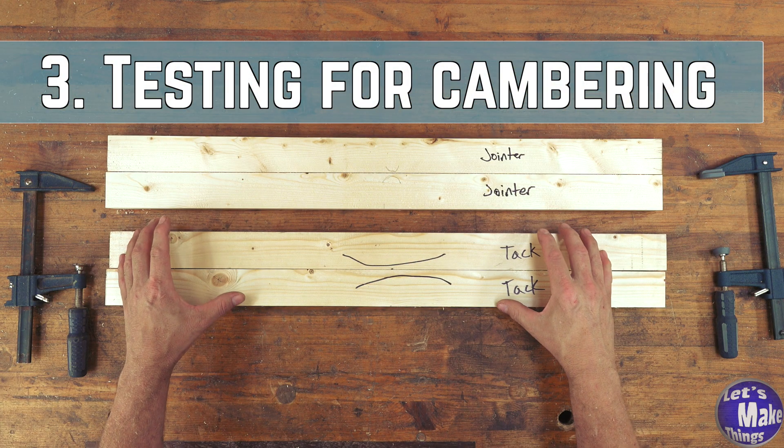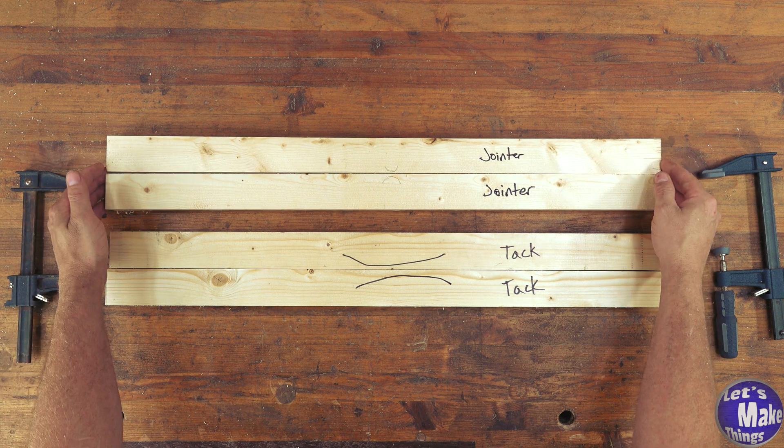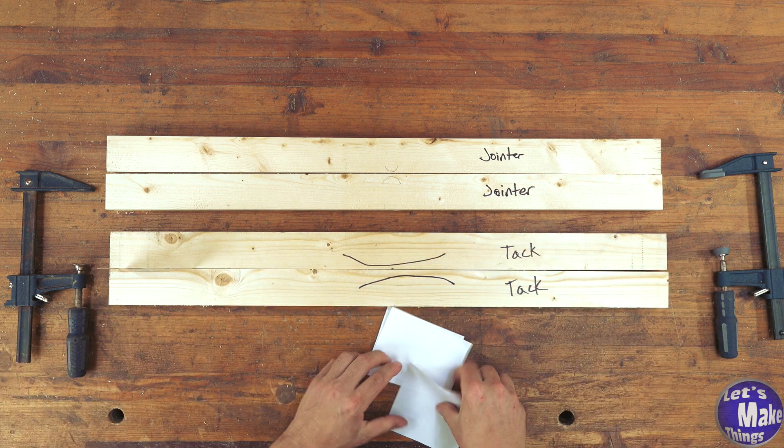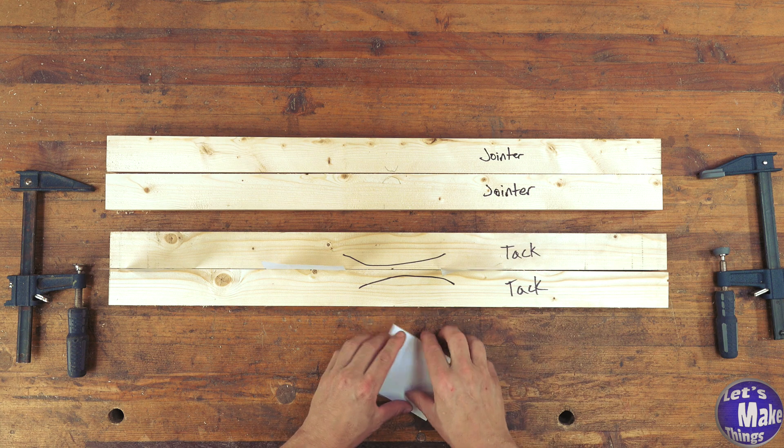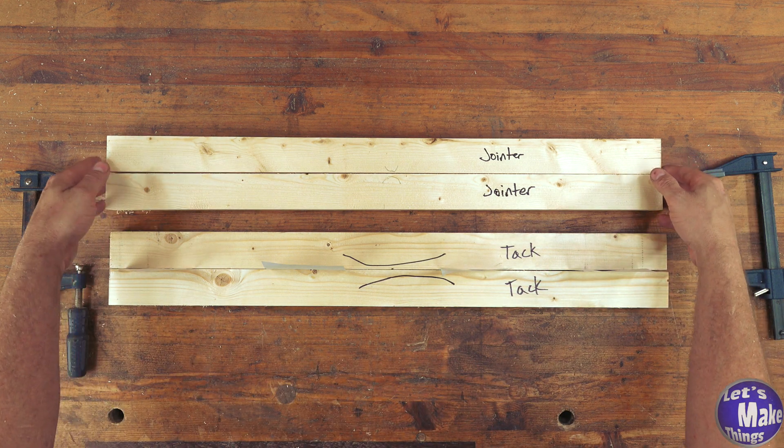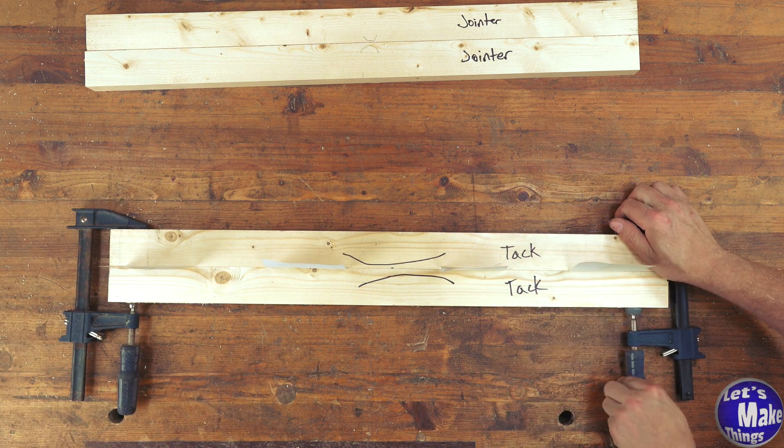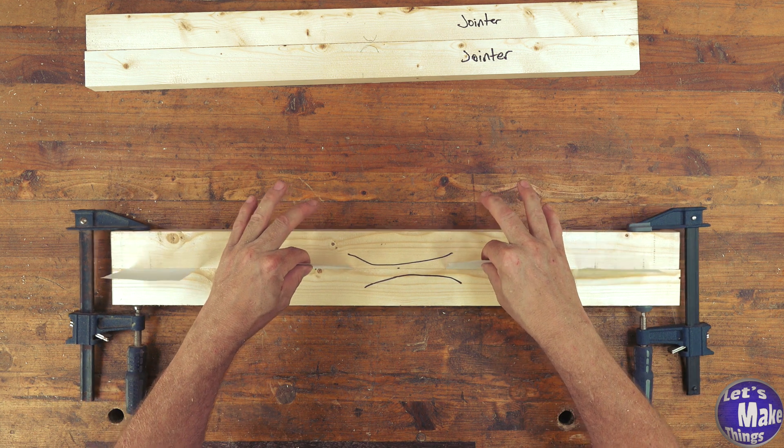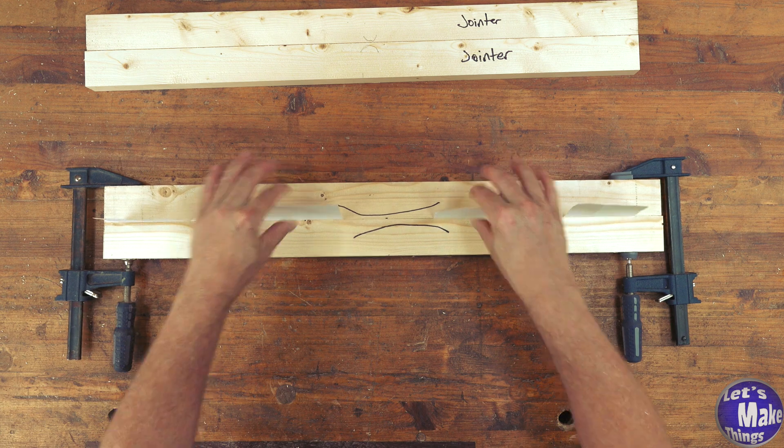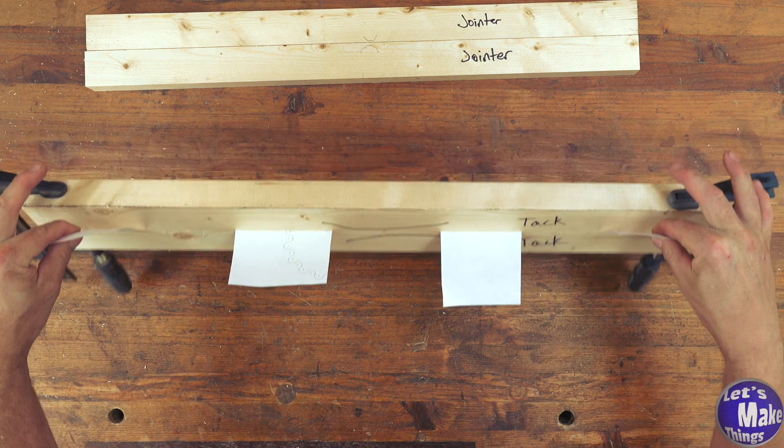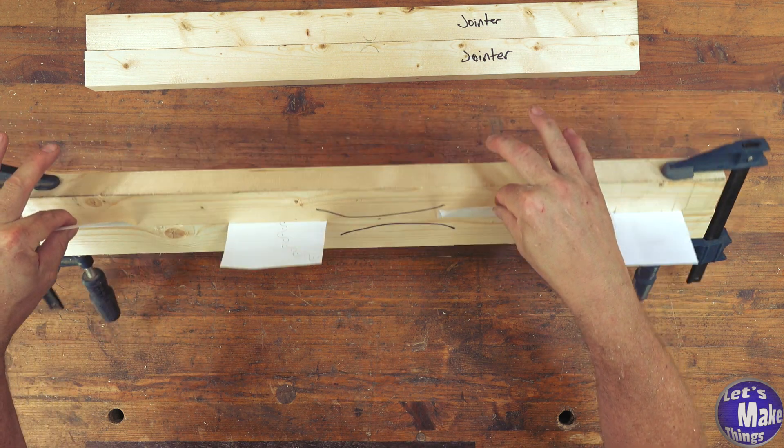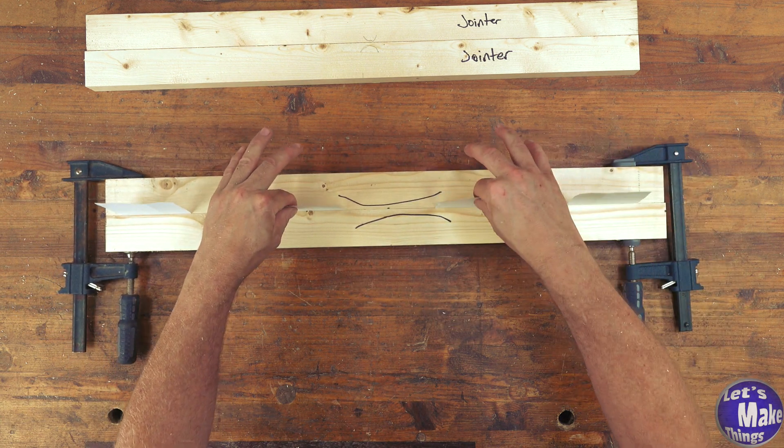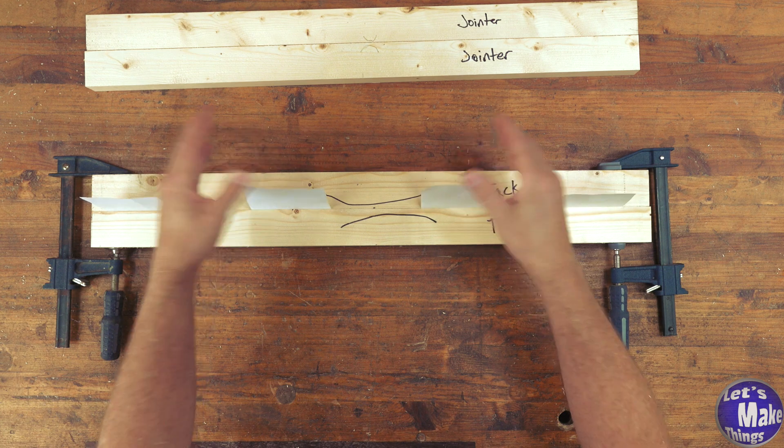Now we'll check to see if this is truly cambered and we'll compare it to the jointer. I've got four pieces of paper here. And the idea is if I've got a nice cambered edge, which is a nice curved edge here, I should be able to pick this up with the papers and not have them come out. So I'll go ahead and set this aside for now. I've got that tightened up and we'll check to see if I can lift this up. And it works.